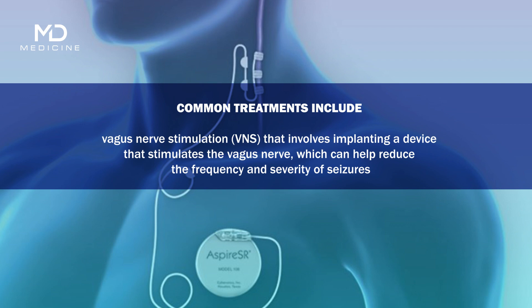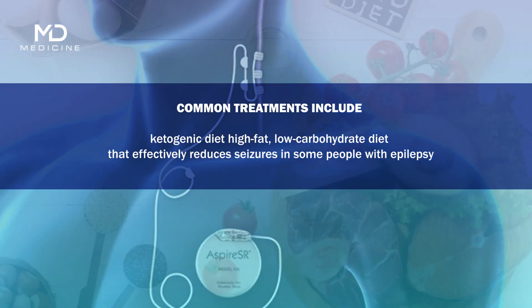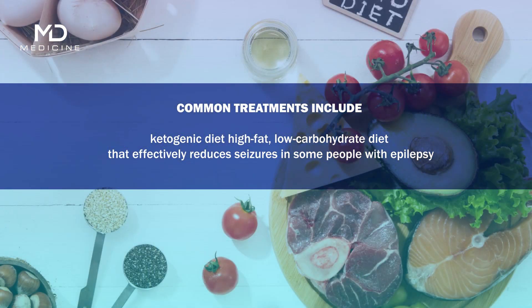Vagus nerve stimulation involves implanting a device that stimulates the vagus nerve, which can help reduce the frequency and severity of seizures. A ketogenic diet — a high-fat, low-carbohydrate diet — may also effectively reduce seizures in some people with epilepsy.